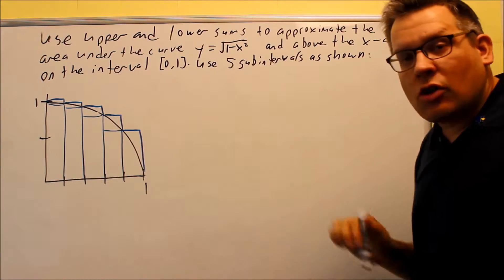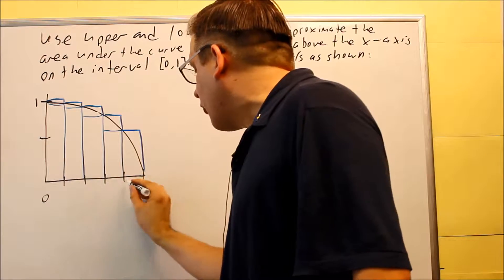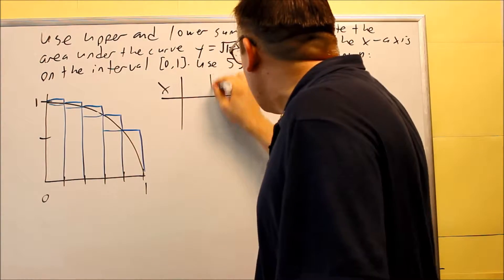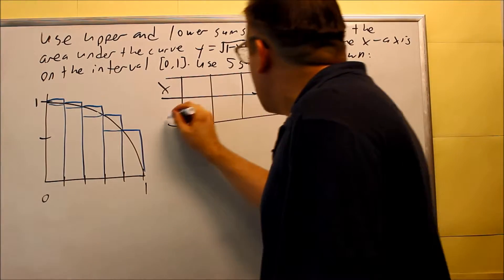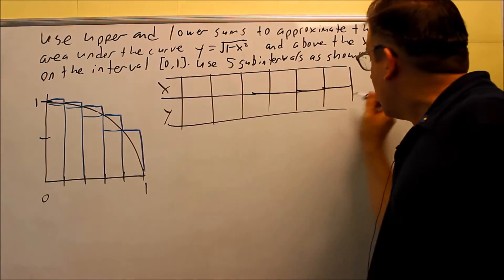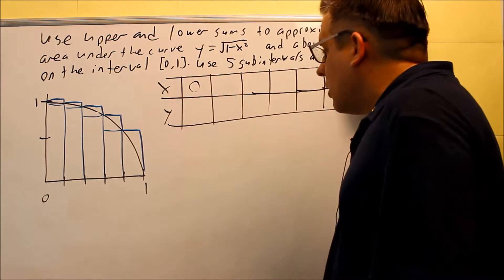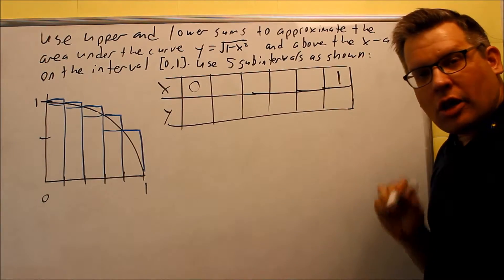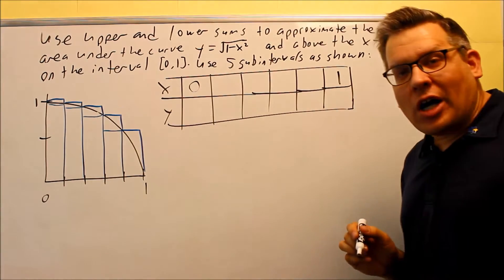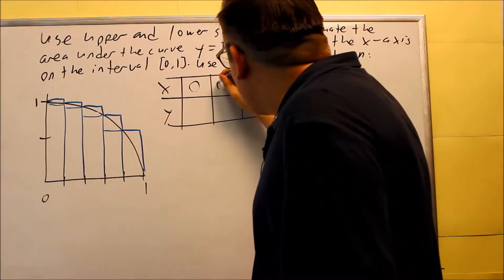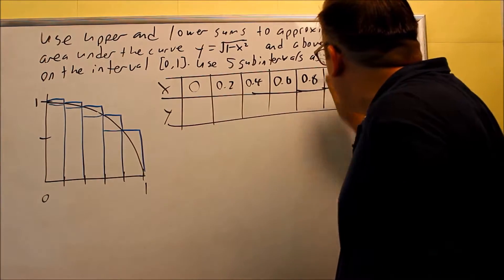For all these kinds of problems where they give you an equation, you want to definitely make a table of values. I'm starting with 0 and I have 6 different x values on my table. What you're going to do is take the whole interval from 0 to 1, that's 1, and divide it by 5. 1 divided by 5 is 0.2. So each step is 0.2, giving us: 0, 0.2, 0.4, 0.6, 0.8, and 1.